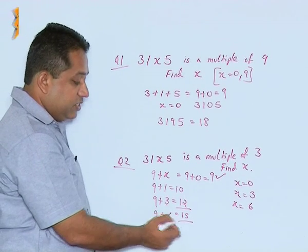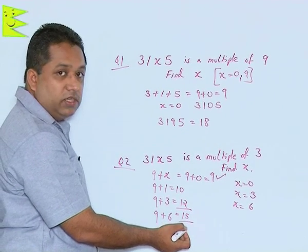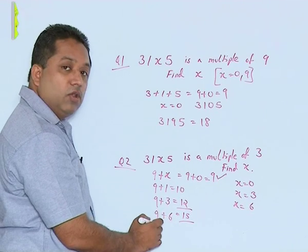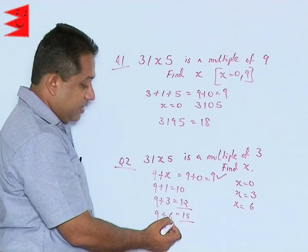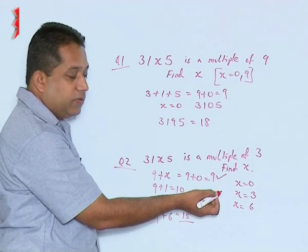Can it be 7? 9 plus 7 is 16 but 16 does not go in 3. Can it be 8? No because 9 plus 8 is 17. 17 does not go in 3.